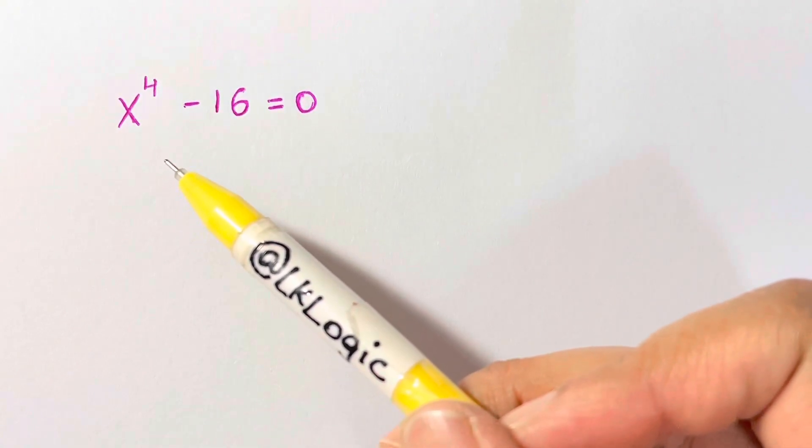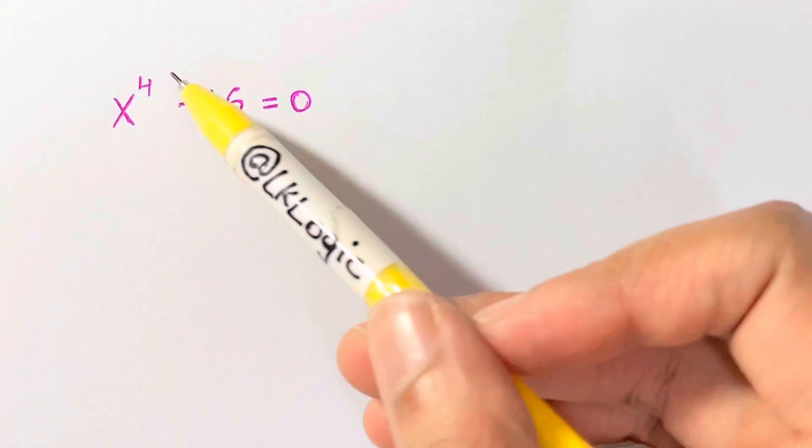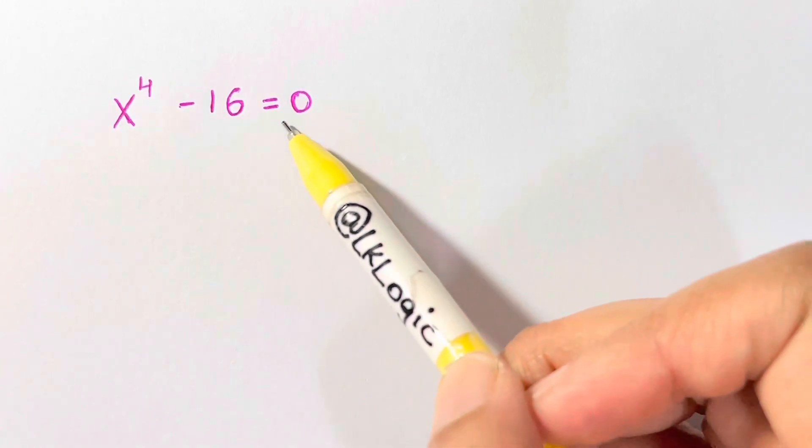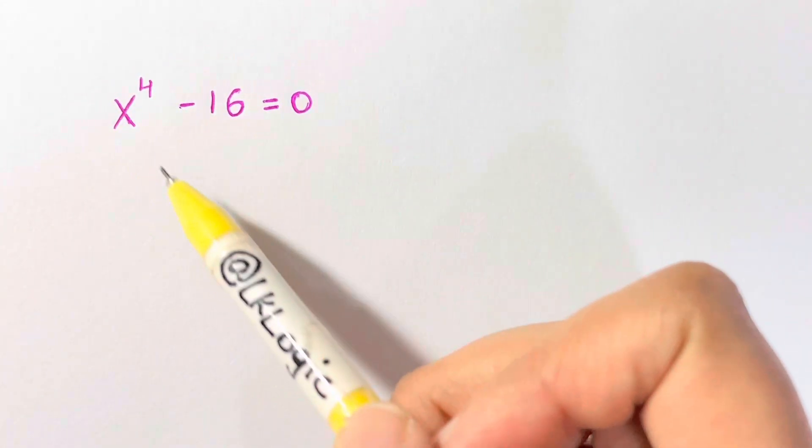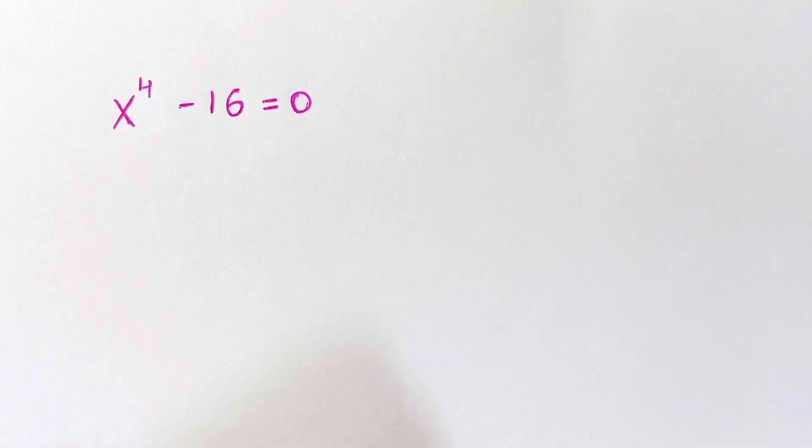Hi guys, I have a very nice problem for you all, which is x raised to 4 minus 16 equals 0. So as it is raised to 4, we have four solutions for this equation. Let's find it out.